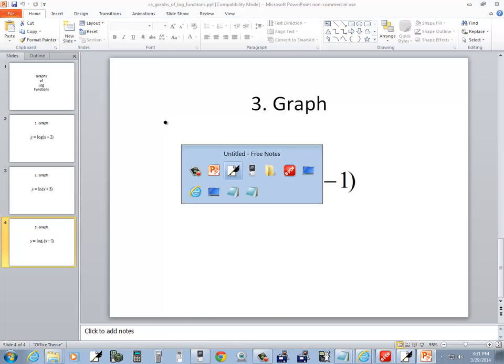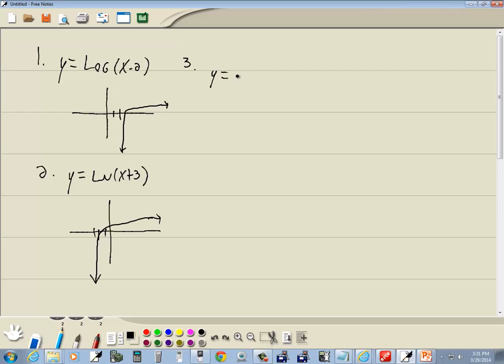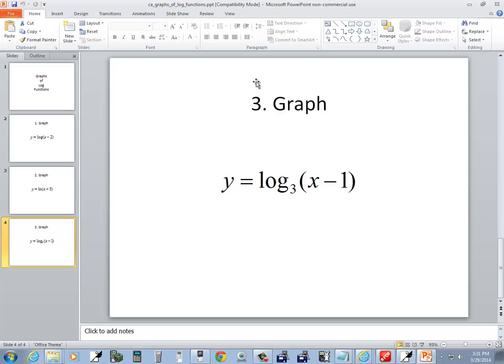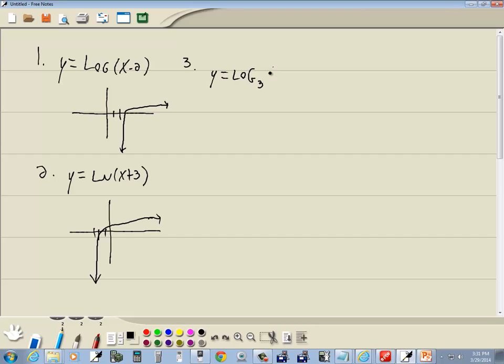And then our third one, log base 3 of x minus 1. I'm going to show you two different ways of doing this one. Now, this first graph we looked at was base 10. It just said log. This one is base E. It just says LN, natural log. This one has a number here, so it has base 3.